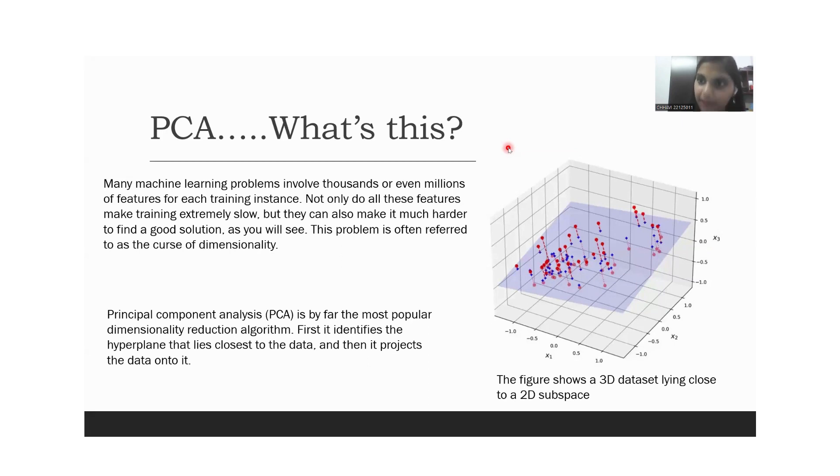To reduce the dimension, we use PCA. What PCA does is it finds a plane and projects the data onto that. As we can see in the picture, we had three dimensions earlier. Then we found a plane and projected the data onto that and converted the 3D data into 2D data.